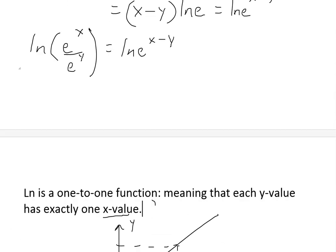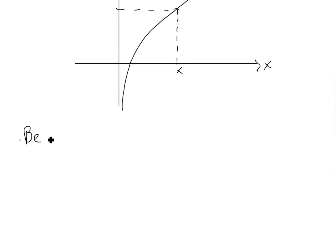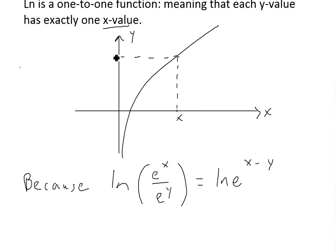So what this means then, if we have this part right here: ln of e to the x divided by e to the y is equal to ln of e to the x minus y. Because this is true, this just means that these have the exact same y value here.